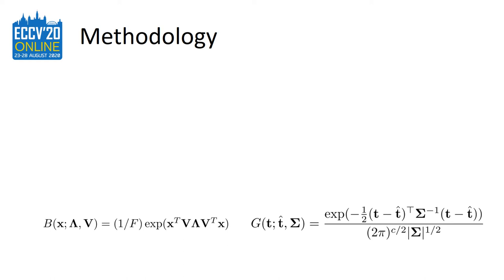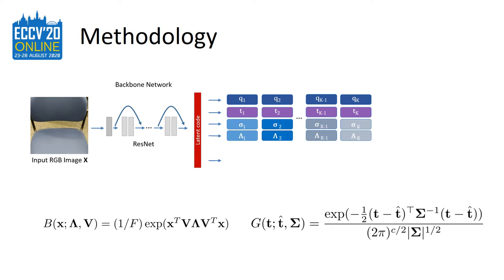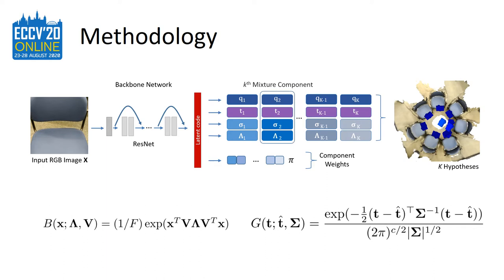To obtain a multimodal prediction, we model the camera's orientation using the Bingham distribution, whereas the translation is handled with Gaussian distributions commonly used in mixture density networks. We then train a neural network on RGB images to predict a mixture of Bingham and Gaussian distributions — for each hypothesis including orientation, translation, concentration parameters, variance, and mixture coefficients. By adjusting the number of predicted hypotheses, we can easily influence the resulting distribution; resetting this parameter to 1 would result in a unimodal version of our method.